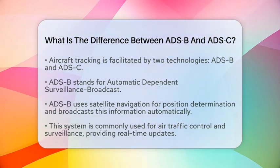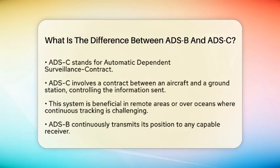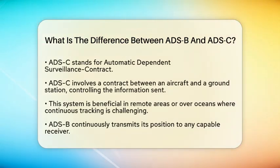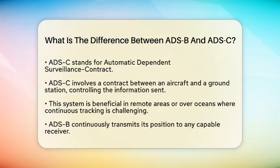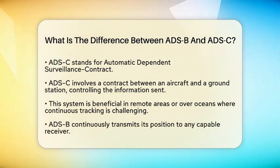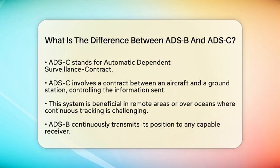On the other hand, Automatic Dependent Surveillance Contract operates differently. This system involves a contract established between an aircraft and a specific ground station. The ground station controls what information is sent and when. This makes ADS-C particularly useful in remote areas or over oceans where continuous real-time tracking is not practical due to limited infrastructure.